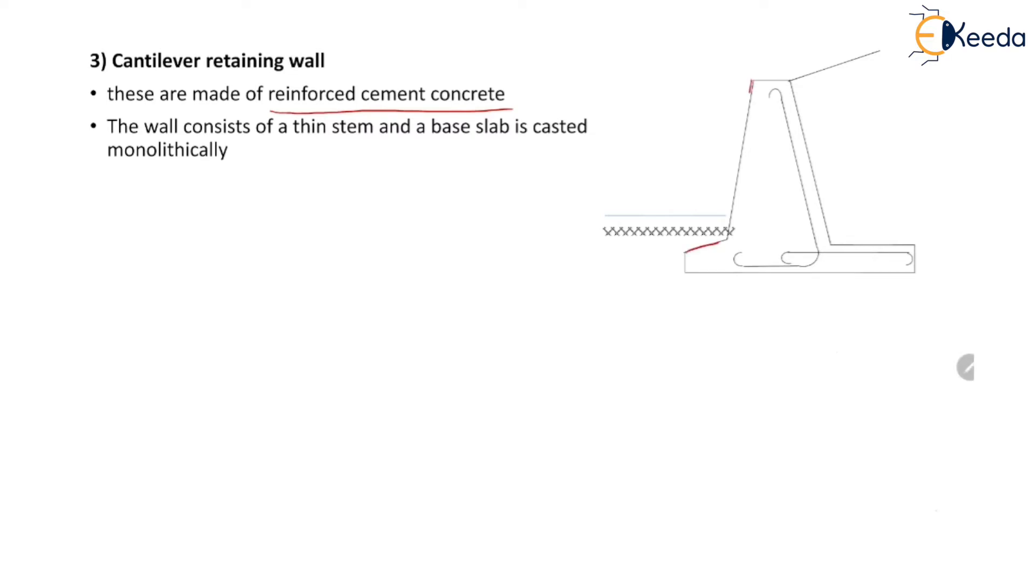Here in this figure we can see that the stem and the base slab both are cast monolithically, meaning they are cast as one unit and there is no joint between stem and base slab.